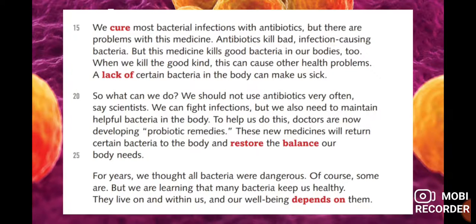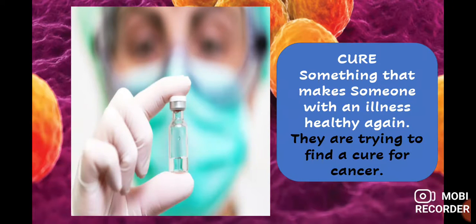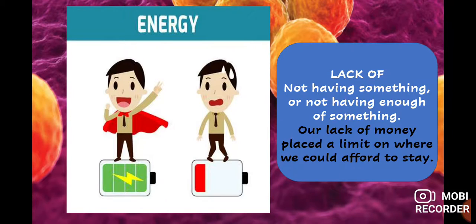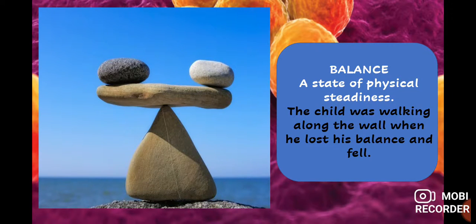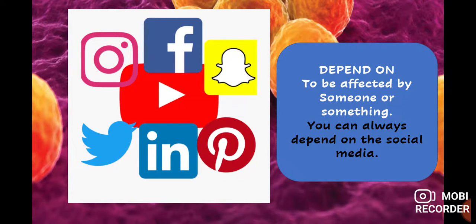Now the next vocabulary. 'Cure' means something that makes someone with an illness healthy again — they are trying to find a cure for cancer. 'Lack of' means not having something or not having enough of something — a lack of money, a lack of energy, a lack of knowledge. 'Restore' means to bring back to a normal or healthy state — the patient was soon restored to health. 'Balance' is a state of physical steadiness — the child lost his balance and fell. 'Depend on' means to be affected by something — you can always depend on social media.